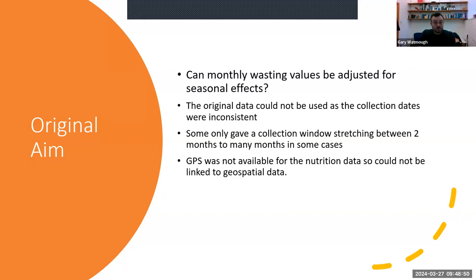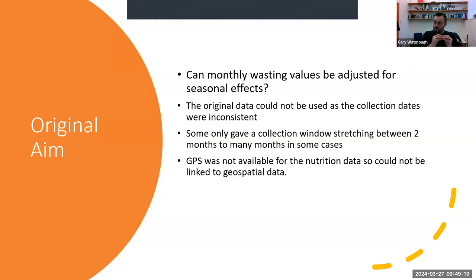The original data — the SMART Surveys from the JME conducted within countries — couldn't be used for two main reasons. First, the collection windows could switch between a single month to five, six, or seven months in some countries, making it difficult to establish seasonality if you don't know precisely when in the year the data was collected. Second, the spatial information wasn't detailed enough. We needed something that embeds the data within a specific area of a country so we can link it to the climate geospatial data sets.